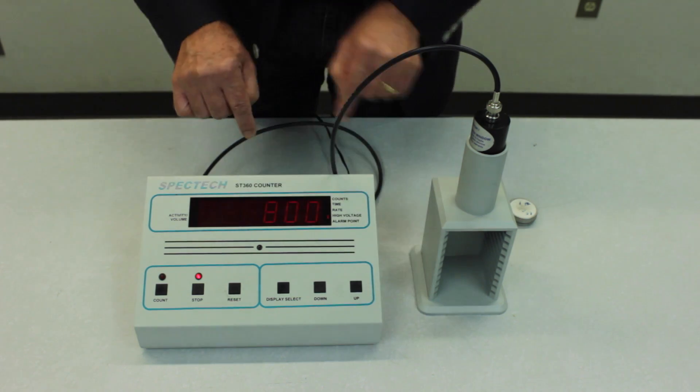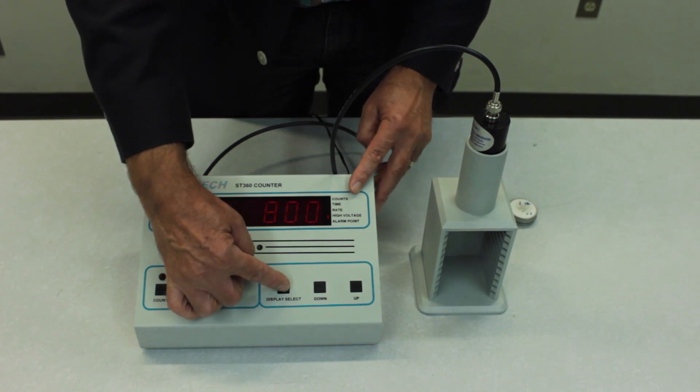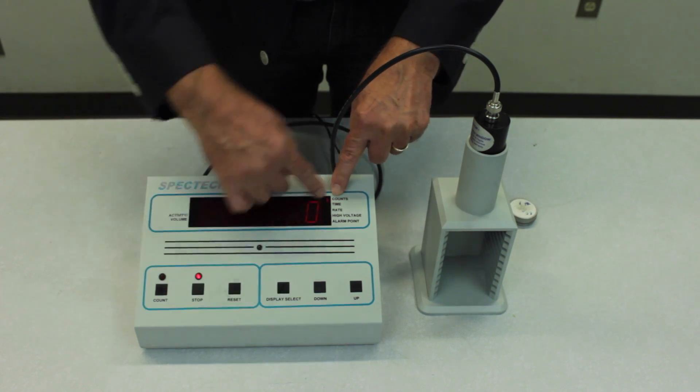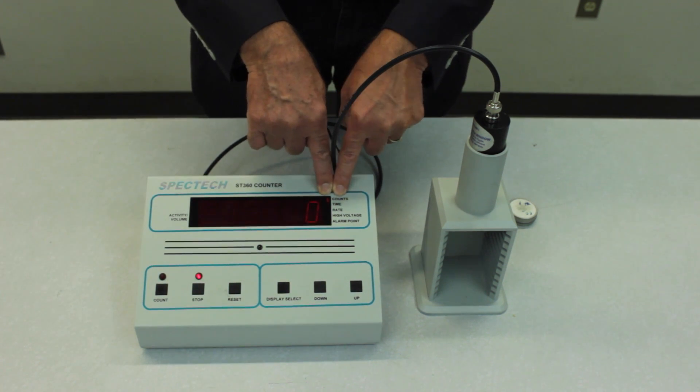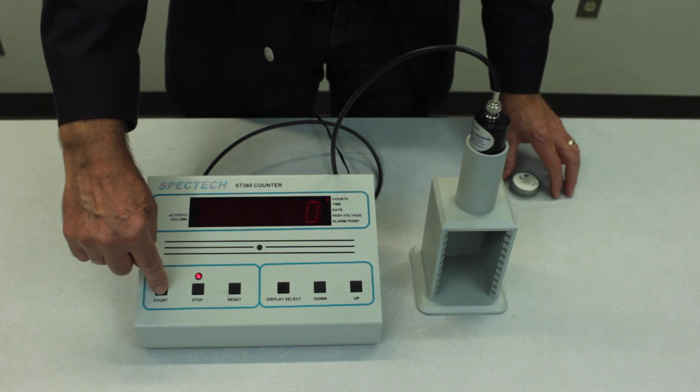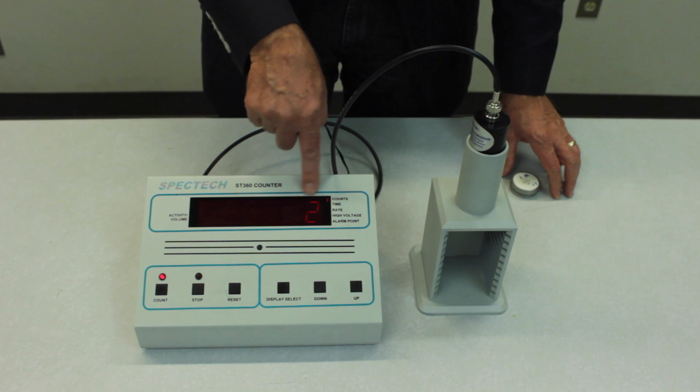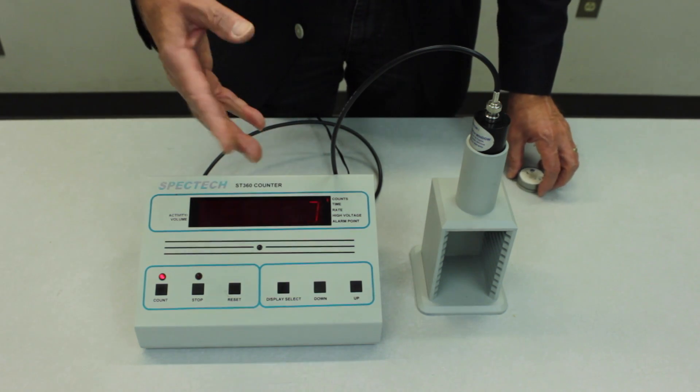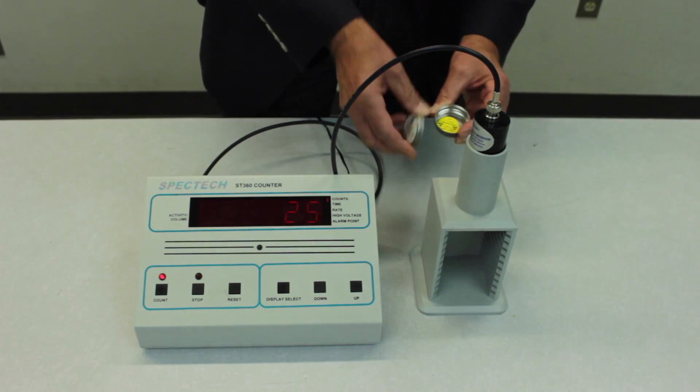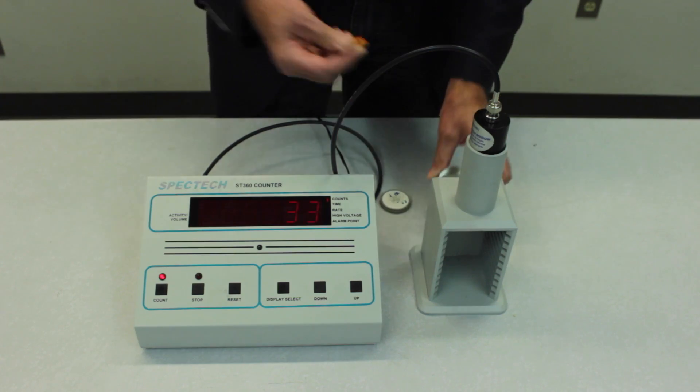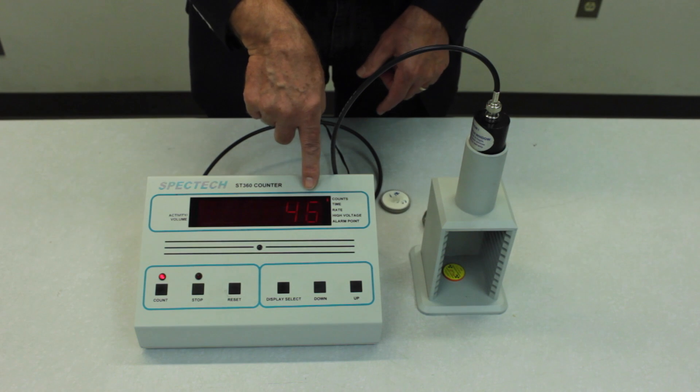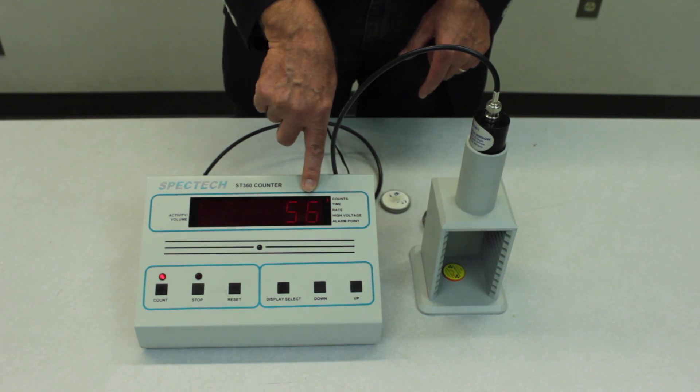And once you've set the voltage then you press the display select button again. Actually press it two more times to get it back to the count function. And we start a count. So you press the count button to begin. And what we're doing now essentially is counting basically background radiation. The source is far from the detector. But once we put the source in the chamber then the counts begin to accumulate at a much faster rate.